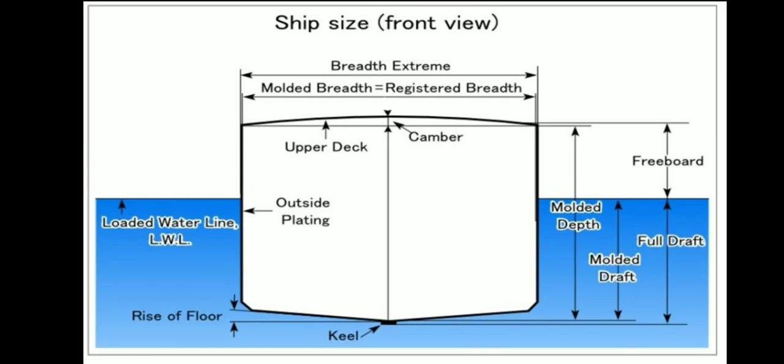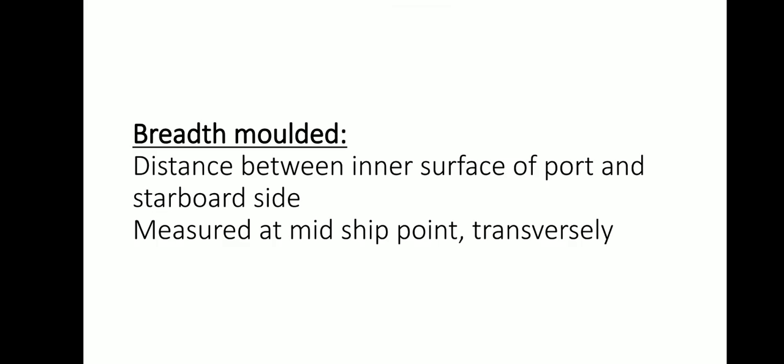From the ship's front view, we can see breadth extreme — the greatest breadth including the outer surface of hull plating. The front view also shows upper deck camber, waterline, outside plating, rise of floor, keel, molded depth, molded draft, full draft, and freeboard. Breadth molded means it is also the greatest breadth of the ship, but measured from the inner surface of the port and starboard sides, also at the midpoint in the transverse direction.